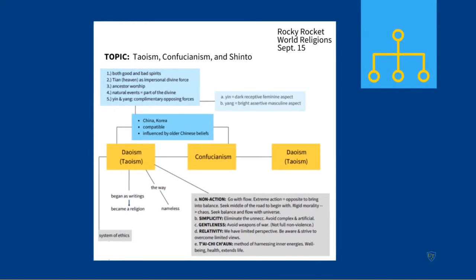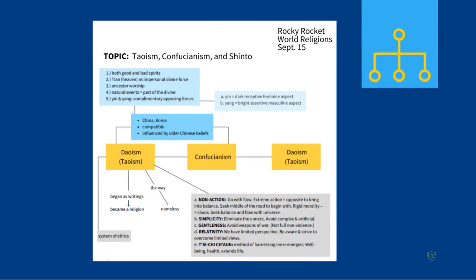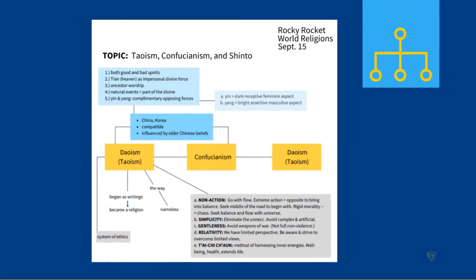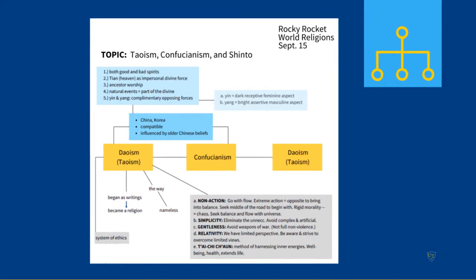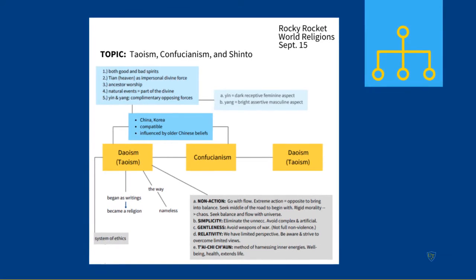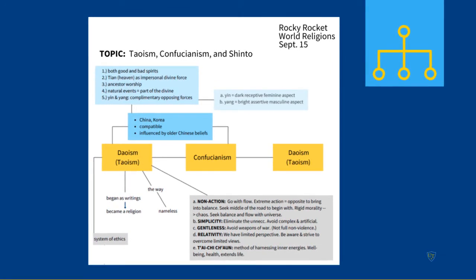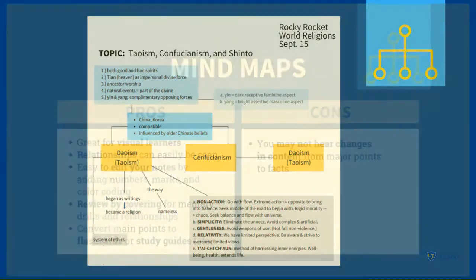On to mind maps. Mind maps start with a central topic at the top of the paper or at the center of the paper. Ideas branch out with facts and details. You can draw your own mind maps or use a free app. In our world religions sample here, the relationships between concepts really stand out.